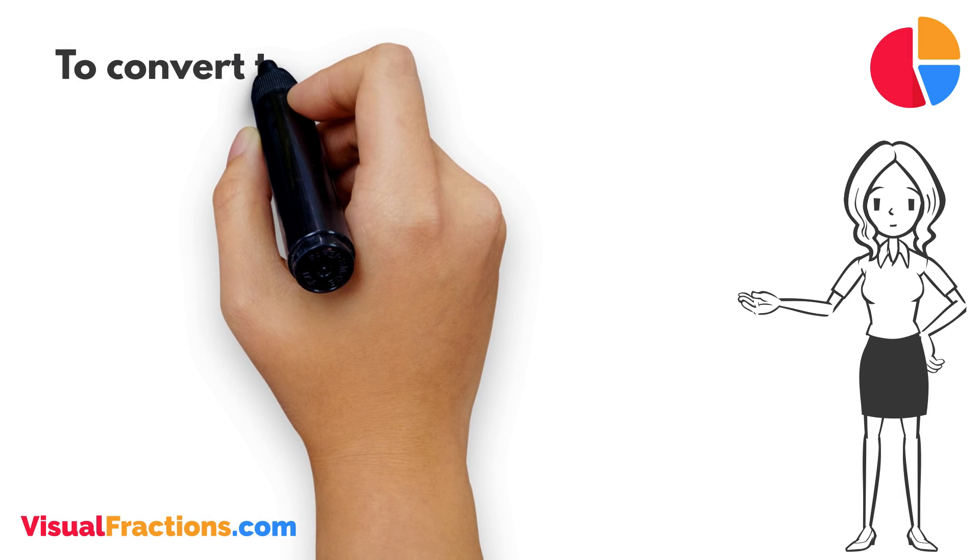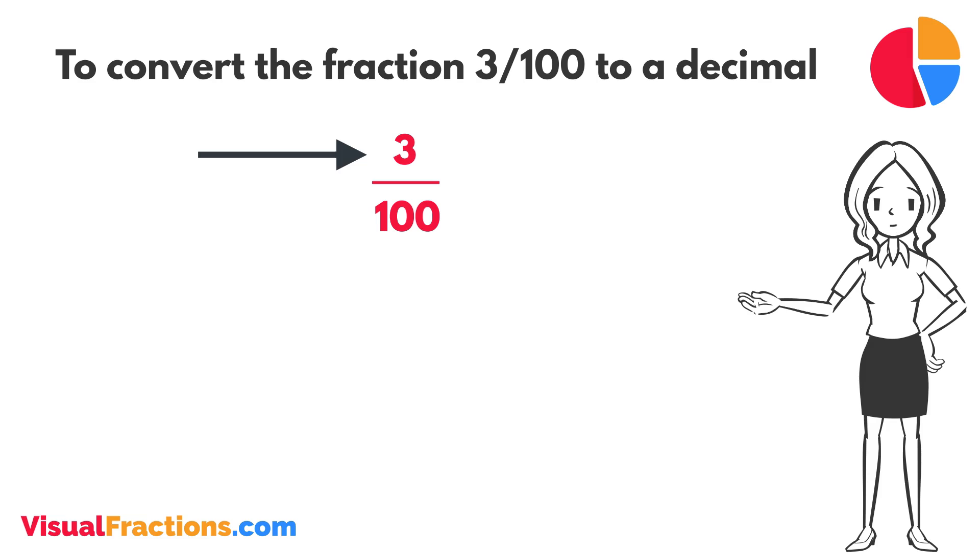To convert the fraction 3/100 to a decimal, all we need to do is divide the numerator, the top number, by the denominator, the bottom number.